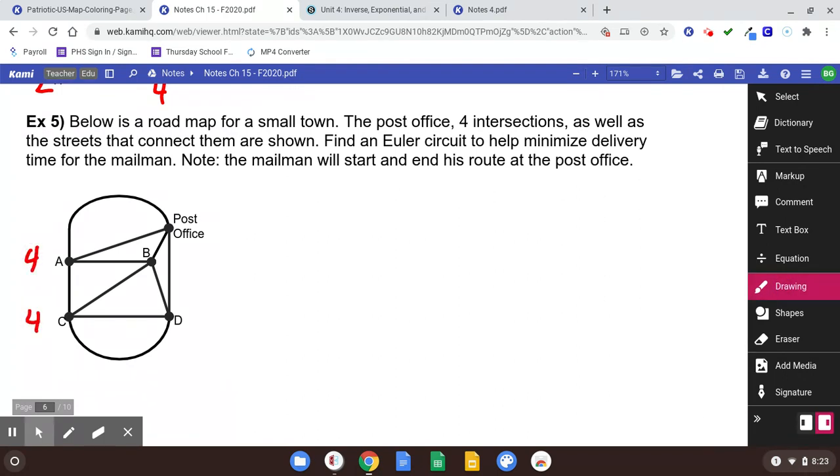They didn't ask me to check the degrees. I guess we could. Four, four, four, four, four. They're all four. I know there's an Euler circuit. I'm going to start at the post office.